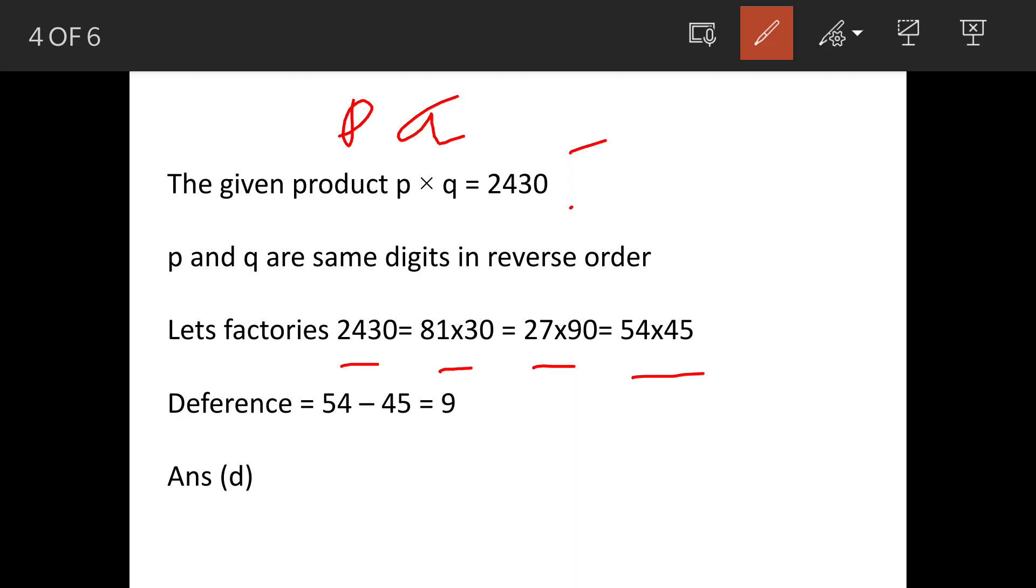When we get 54 and 45 after factorization, we find that in 45, the unit digit is 5, and both numbers are actually meeting the requirement. That means 54 and 45 are in reverse order. So the difference is 9, and our answer is option d.